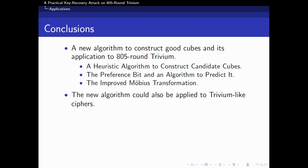Now, we shall make a brief conclusion of our work. In this paper, we introduce a new algorithm to construct good cubes and apply it to 805-round Trivium. More specifically, a new algorithm to construct candidate cubes, the preference bit and an algorithm to predict it, and the improved Möbius transformation were presented. Hopefully, we believe that the new algorithm could also be applied to Trivium-like ciphers. Thanks for your attention.